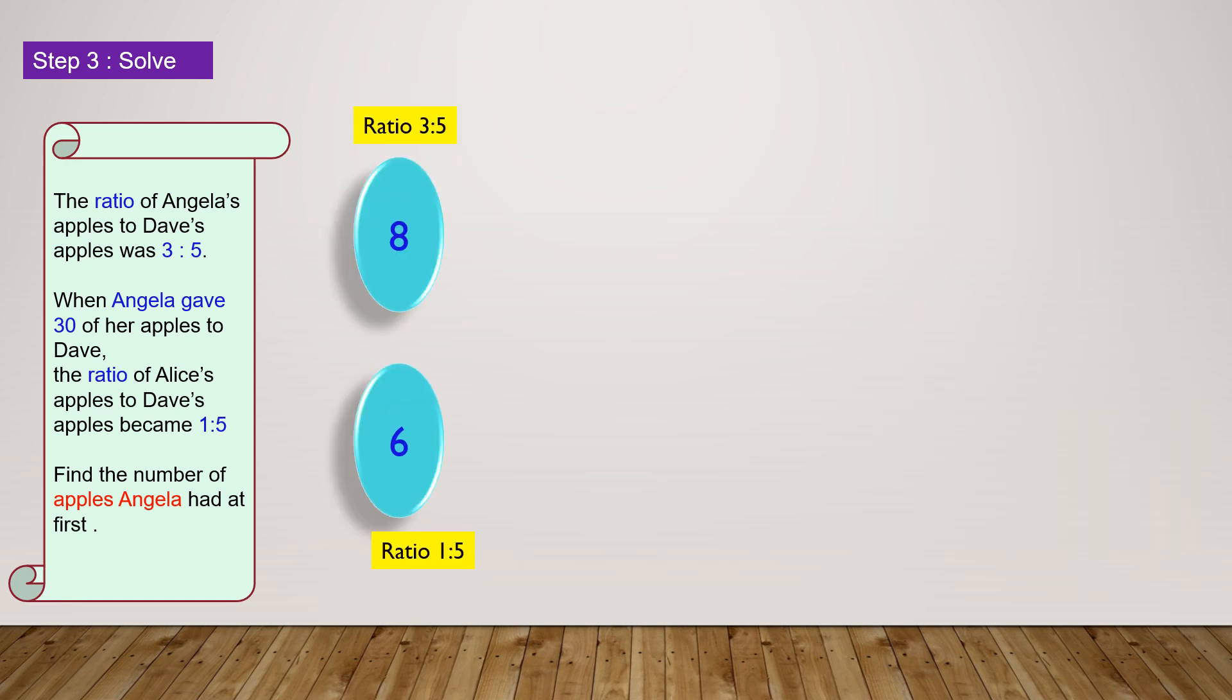In order to achieve this, we will have to find the multiples of 8 and 6, and found out what multiple is common. 8 has the multiples 16 and 24. 6 has the multiples 12, 18, and 24. This means if we increase the units in ratio 3 is to 5, 2 times, and the units in ratio 1 is to 5, 3 times, we can get an equal number of units.